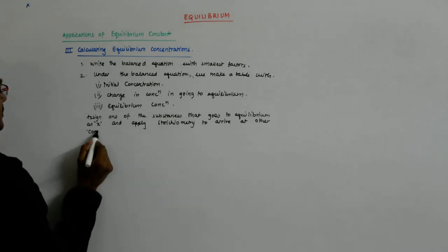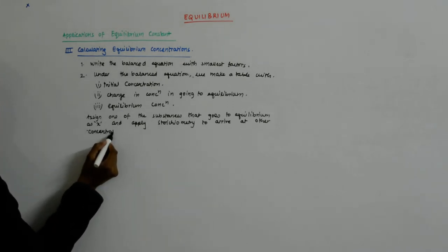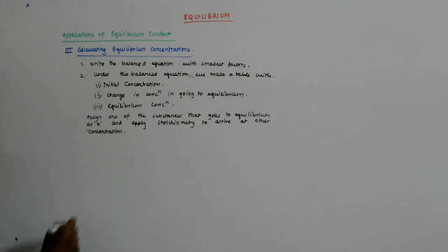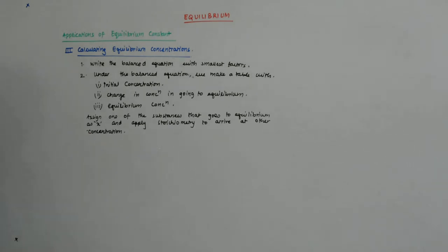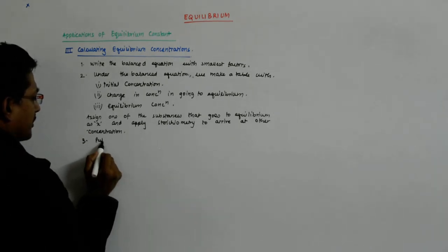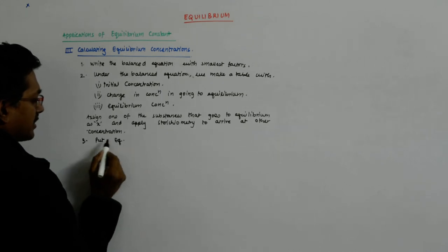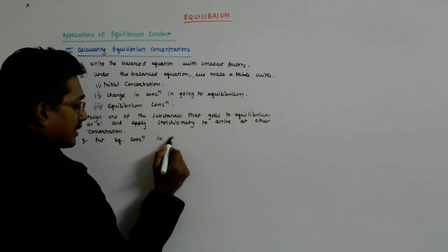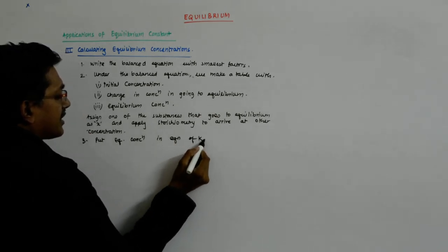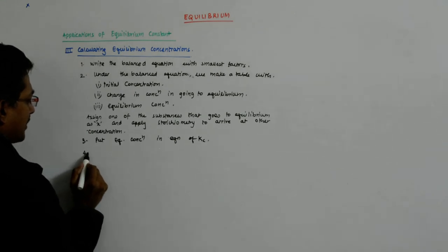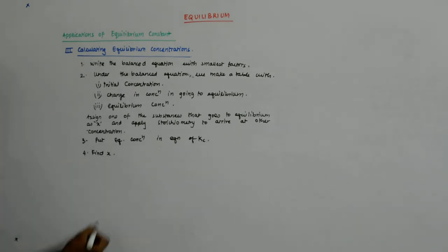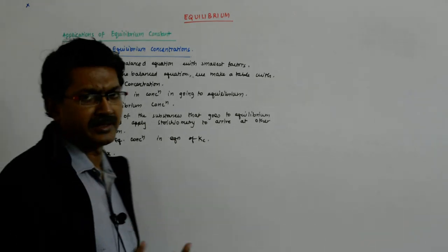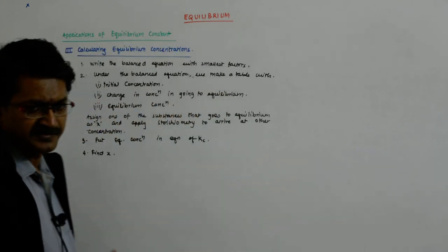Otherwise it is pretty obvious how things happen. And then, for the equilibrium concentrations, put the equilibrium concentration in the equation of Kc, and then find x. And then put it in all the values and you'll get the equilibrium concentration.